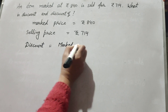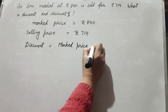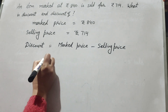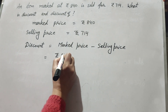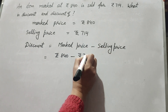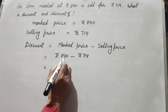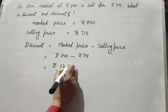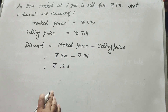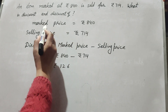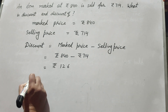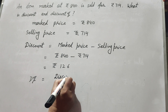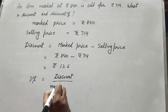We need to find the discount and discount percentage. Discount is equal to marked price minus selling price. Marked price is rupees 840 minus selling price rupees 714. So 840 minus 714 gives us rupees 126. So the discount is rupees 126.